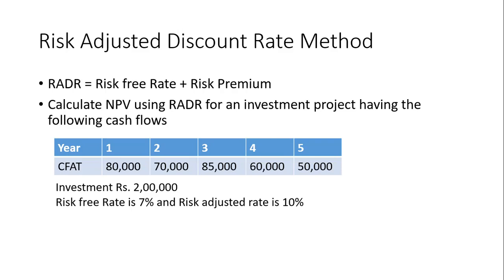As you know the NPV concept — net present value — if the NPV comes positive, you will select the project. If it is negative, less than zero, you will reject the investment project. In this question, you have to calculate NPV using RADR — Risk Adjusted Discount Rate — for an investment project having the following cash flows.